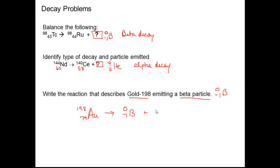So the other product would be 198 because 198 plus 0 is 198 and 80. 80 minus 1 is 79 and 80 corresponds to mercury.